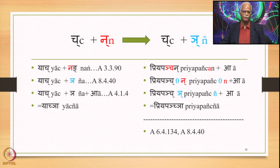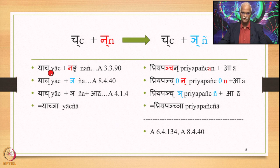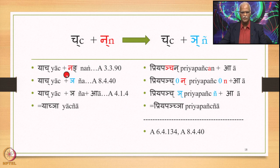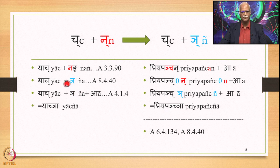Let us take the example of Chuhu plus Na as the input and Chuhu plus Yen as the output. We have the verbal root Yacha to which is added the suffix Nang by the Sutra 3.3.90. So Yacha plus Na — this Na now coming in contact with this Chuhu, which is Shchuhu, while Na is Stuhu. So this Stuhu is substituted by Shchuhu, and the correspondence relation Yathasankhanyaya comes into play. Na, which is the fifth sound in Tavarga, is replaced by the fifth sound in Chavarga. So we have Yach plus Yen, and adding the feminine suffix we get the word Yachiyan.